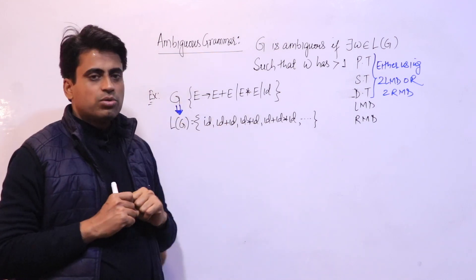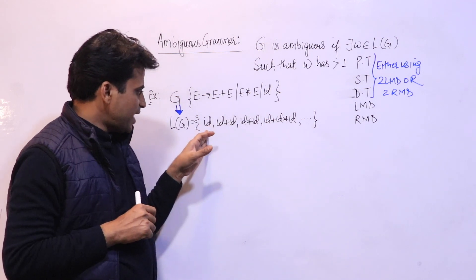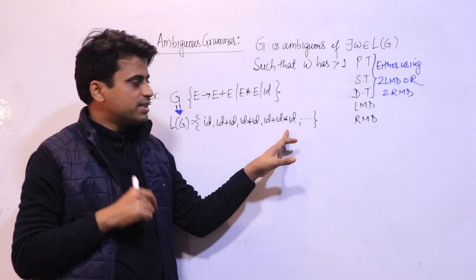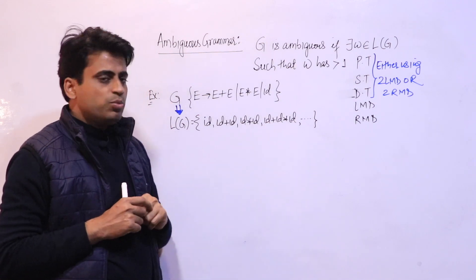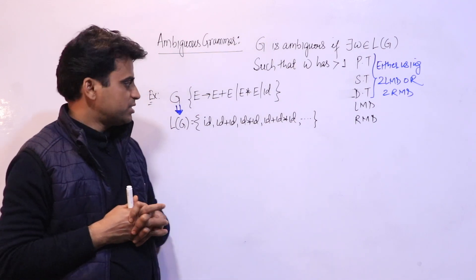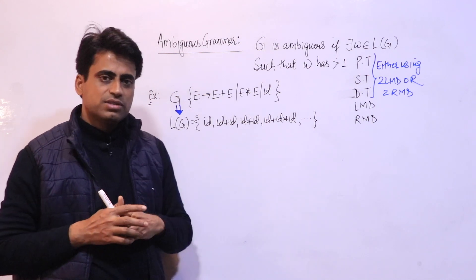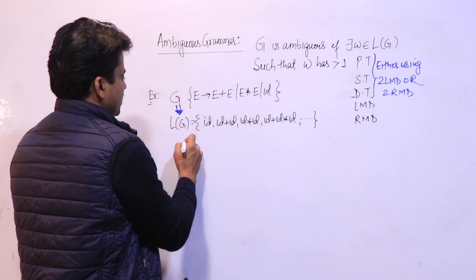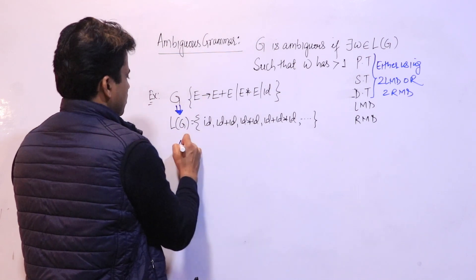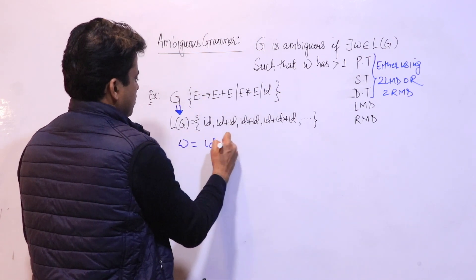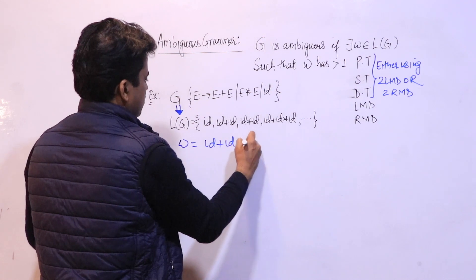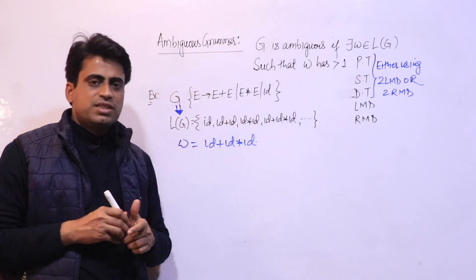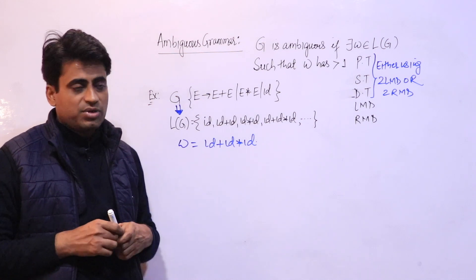अब यह grammar ambiguous कब होगा — जब इस language में अगर एक भी ऐसा sentence है, जिसके लिए two parse trees, या two LMDs, या two RMDs exist करें, तो वो grammar ambiguous होगा। चलिए देखते हैं — हम इसमें से एक string लेते हैं, और उस string के लिए two LMD या two RMD से parse tree construct करते हैं।